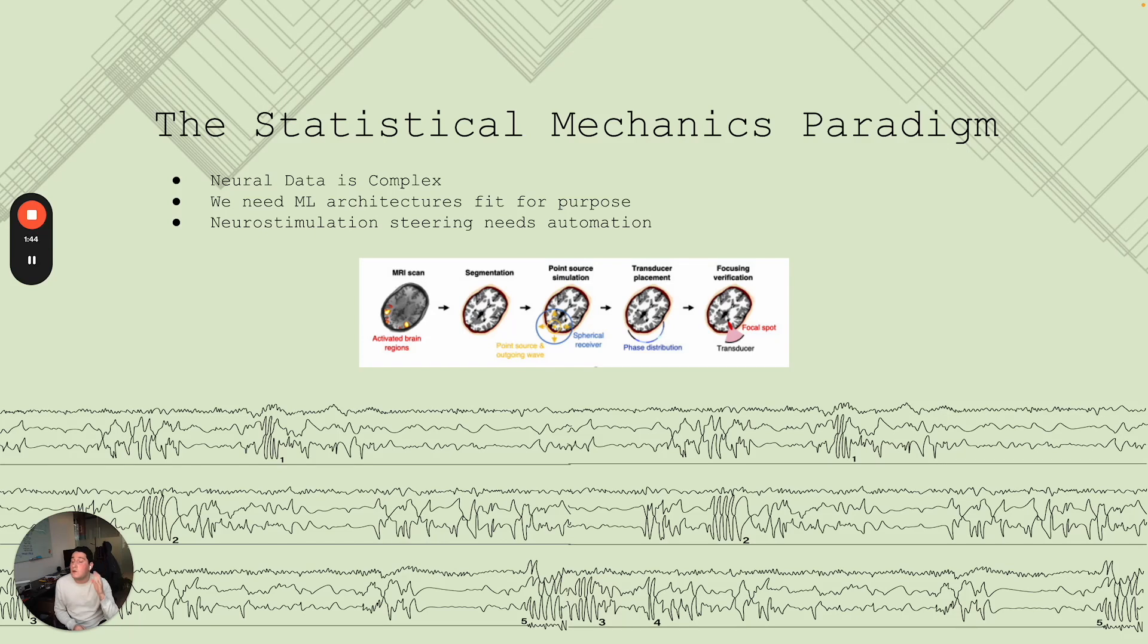Now, even with that extraordinary capacity, neuroscience has been very limited by what we call the statistical mechanics paradigm. So neural data is very complex. When you're talking about fMRI, it's very complex from a spatial perspective. When you're talking about EEG, it's very complex from a temporal perspective. And machine learning architectures were not really fit for purpose. But then, about two years ago, a team developed something called a neural transformer, which is what we use as one of the key inputs to this ultrasonic transformer.